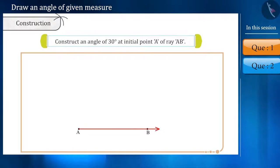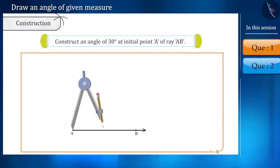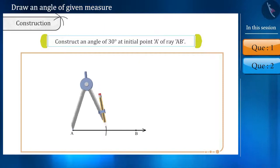Friends, we only have been given a ray AB. Now let's draw ray AB. Now, using a compass, draw a mark of any length like this and name the intersection point as C.